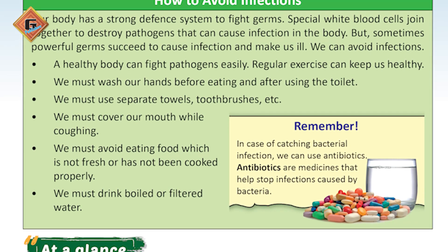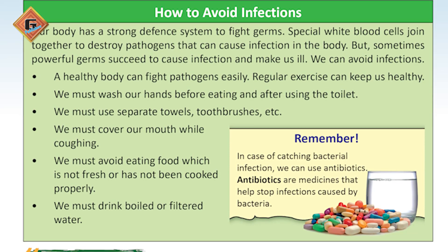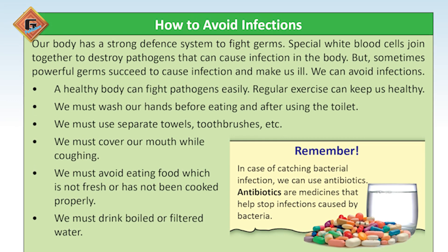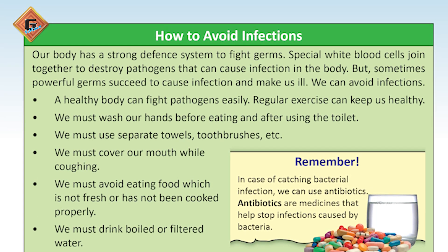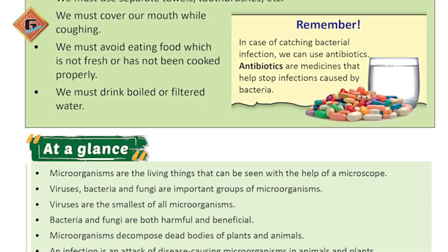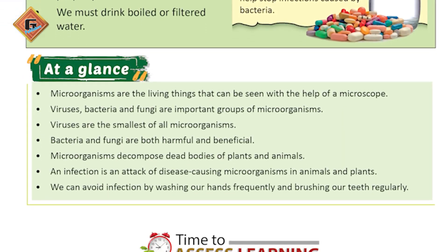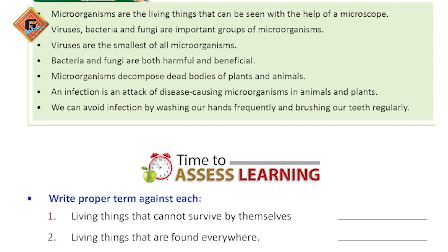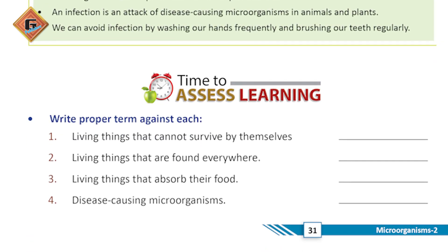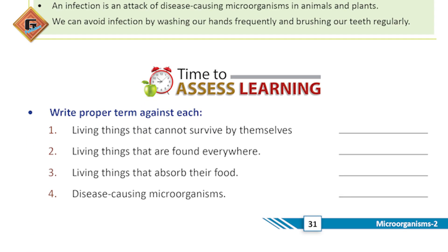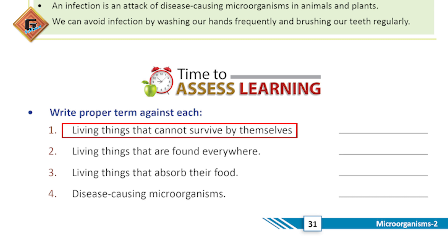Students, in the book page number 31 we have an assessment. Let's start with our first question. What we need to do is match a group of animals against each description. Living things that cannot survive by themselves — what are those?